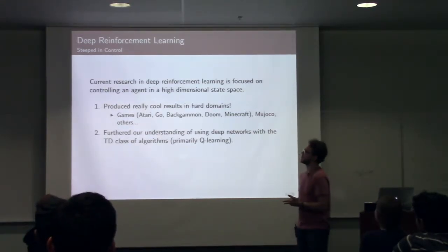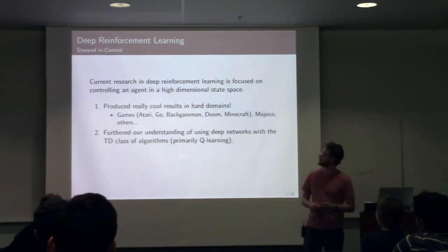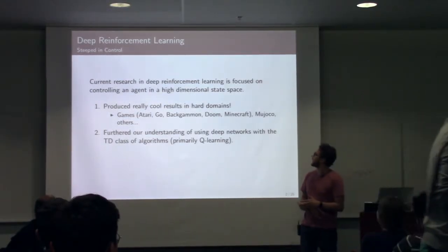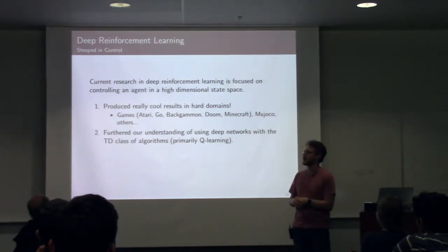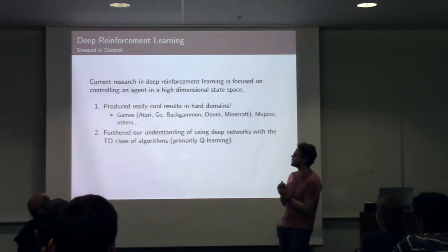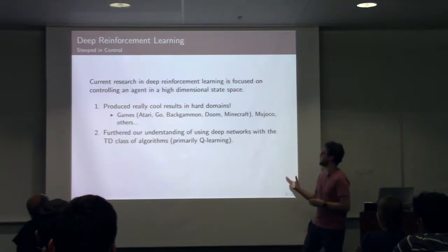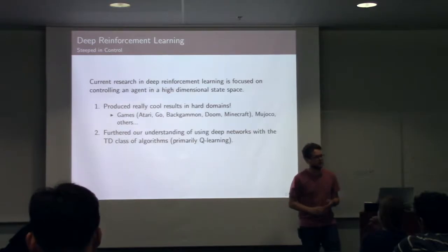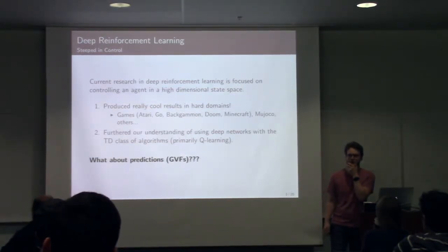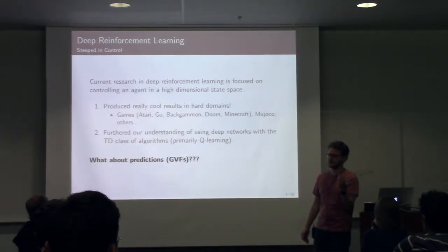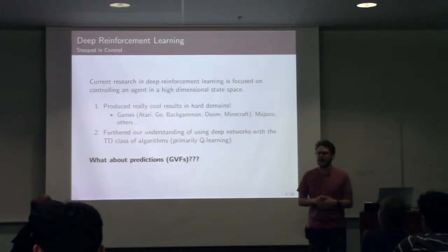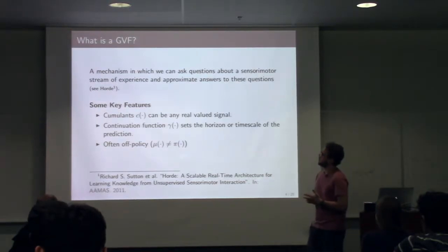The current research going on in deep reinforcement learning is really steeped in control. There's nothing wrong with that. Control is really cool. It's given us a lot of really cool examples of reinforcement learning working. So in games like Atari, Go, Backgammon, Doom, and more general things in Minecraft, you also have a lot of really cool robot-type things going on. And then also Mujoko, where you see one-legged figures jumping around as if they're walking. Also, this has really furthered our understanding of using deep architectures or deep networks with the TD class of algorithms, specifically Q-learning in most of the examples. But one of the questions that I continually ask myself is, where are all the predictions? We want to make predictions. Predictions are interesting. One thing you can think of is, we're already making a lot of predictions through our train of Q-values. But what about other things we can do? What about more general predictions underneath the class of what we would consider general value functions?